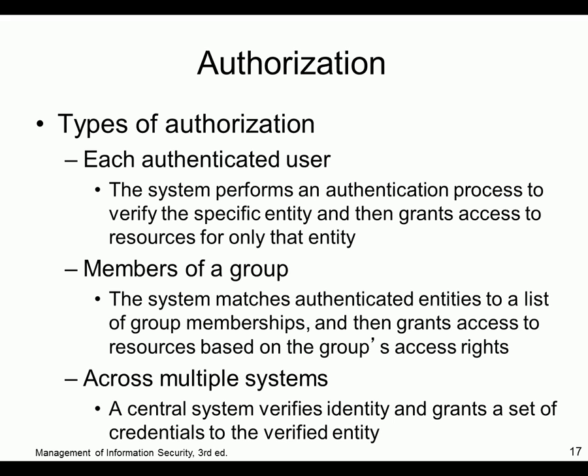Types of authorization: authenticated users are people we know who have been verified. We could also be members of a group — you're granted access based on group membership, kind of like our cleaning crew. You can also have authentication across multiple systems — a centralized login. Like I log into my system at Rose State and I can automatically access the file server and other machines based on domain membership.